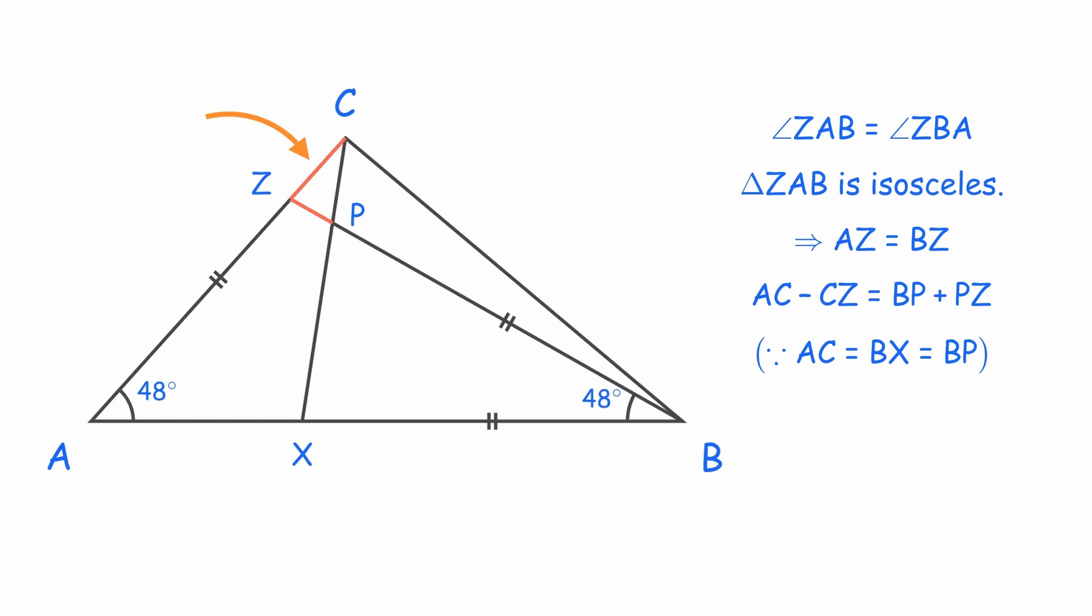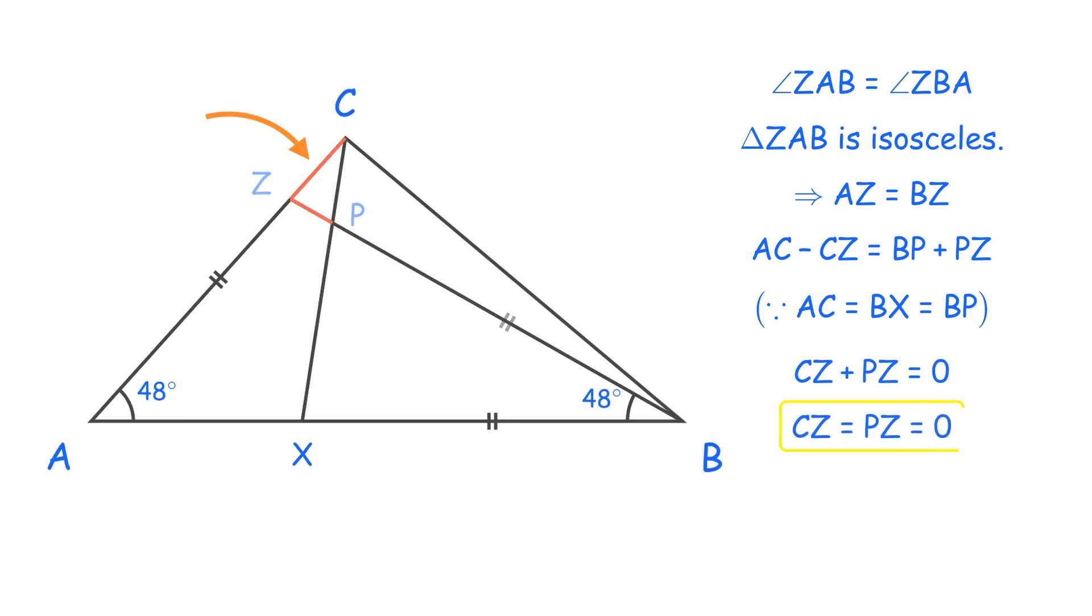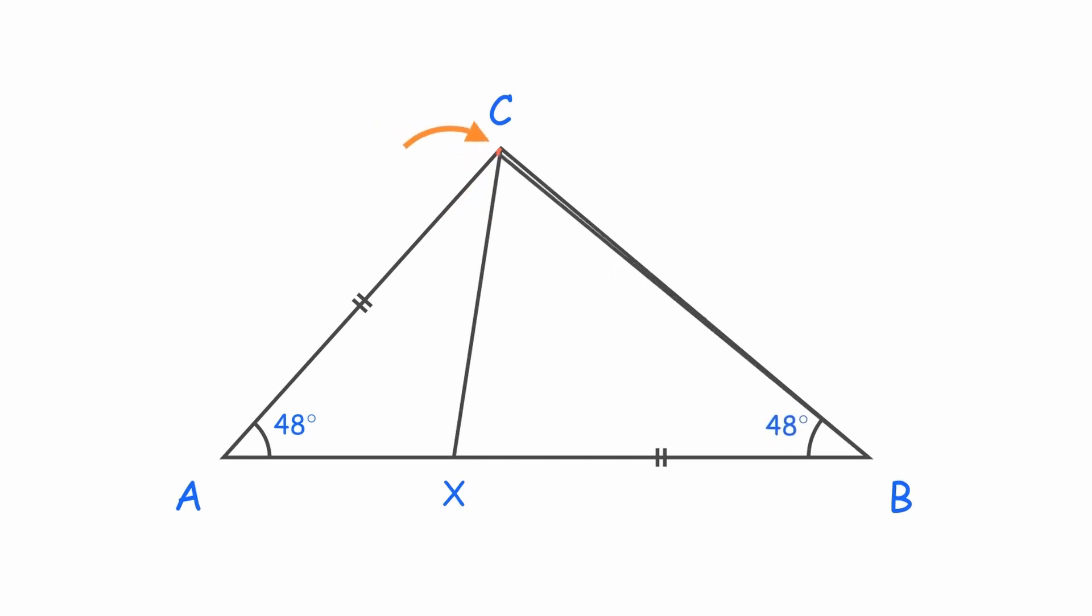all the line segments marked with double dashes are equal. That means CZ plus PZ equals zero, which can only happen if both the lengths are zero. Meaning points C, Z, and P are the same.